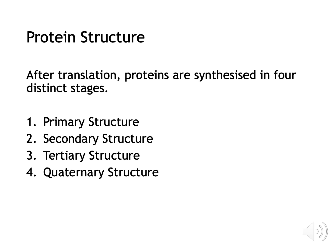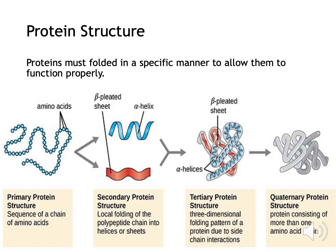After translation, proteins are created in four stages: the first is primary structure, then secondary, then tertiary, and then finally quaternary structure. Proteins are built up in stages from the polypeptide chain into a 3D structure with additional modifications.